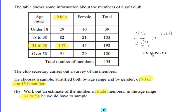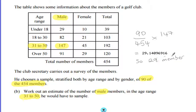Putting that into the calculator gives me 29 and a bit more. We then need to round this to a whole number since we're dealing with people. So, in the sample, we need 29 members that are male and aged 31 to 50, giving us a proportional amount within our 90 sample members.